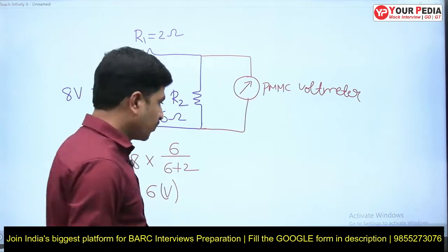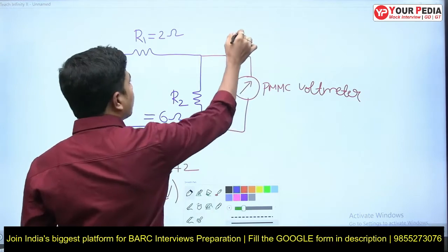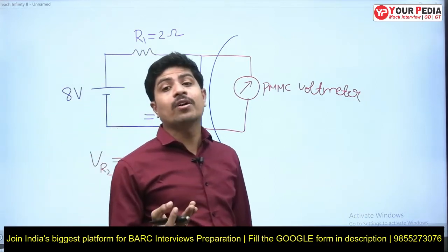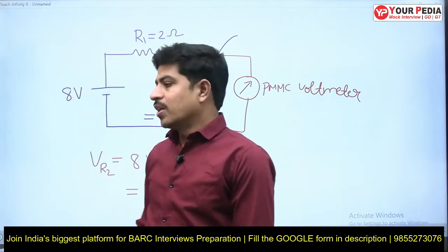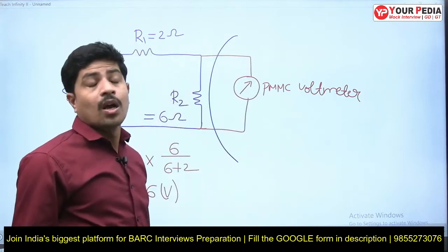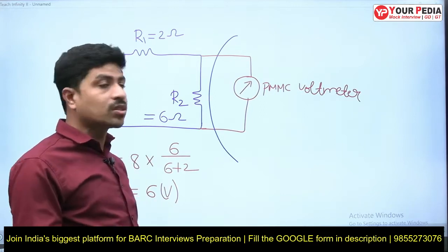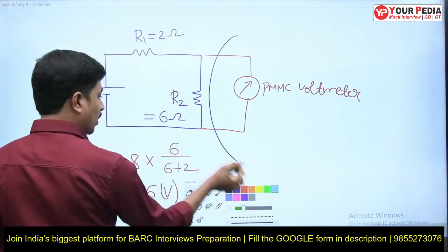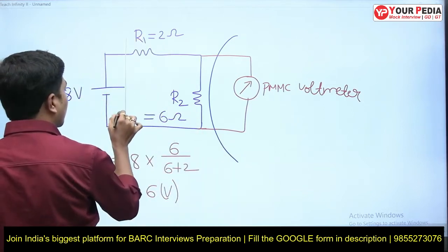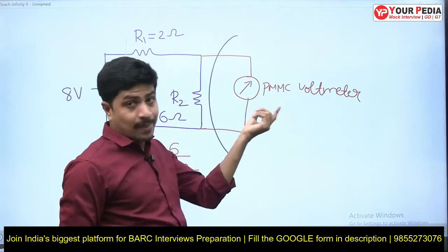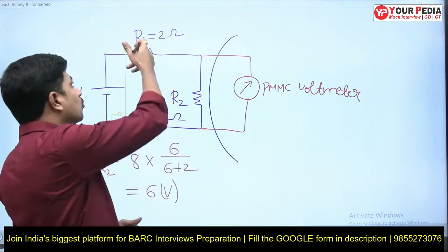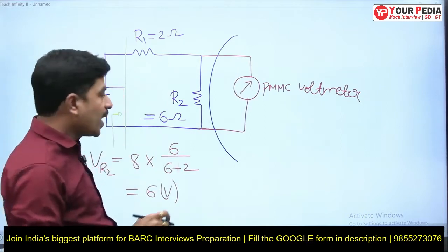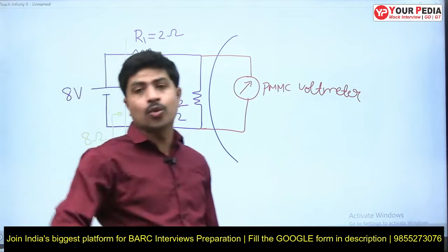There are two cases. Without this meter, if you look at the source — stand in the place of the source and observe the impedance — you remove the voltage source and without the meter, how much is the impedance offered by the circuit? 2 + 6 = 8 ohms. Without the voltmeter means we remove it (open circuit), so the impedance is 8 ohms.